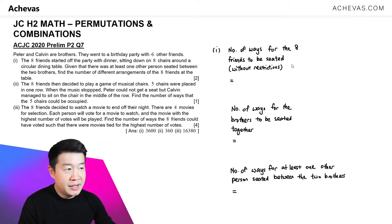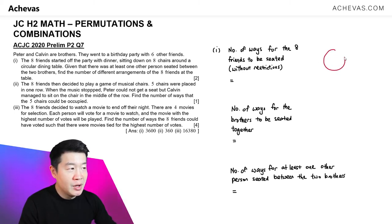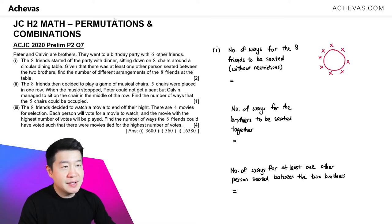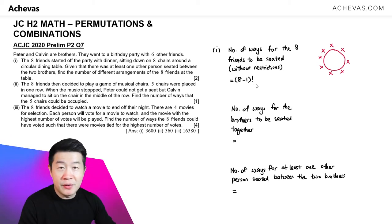For part 1, this is my plan. I'm going to first work on the number of ways such that the 8 friends are going to be seated together at the circular dining table without any restrictions. So 8 people seated at the round table without any restrictions, applying circular permutation: (8-1)! This gives us 5,040.